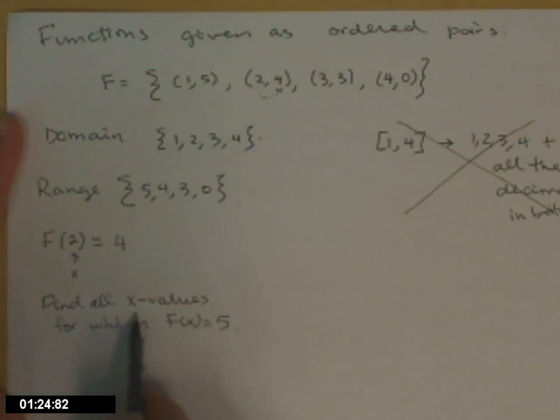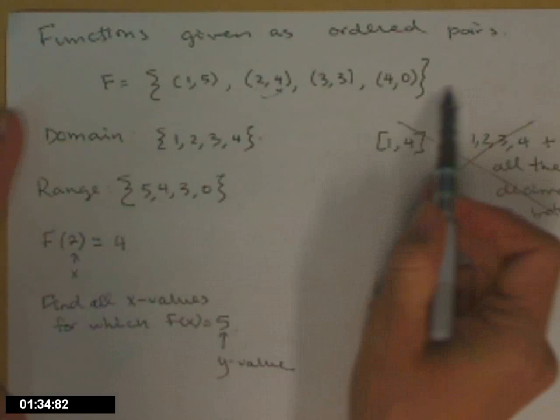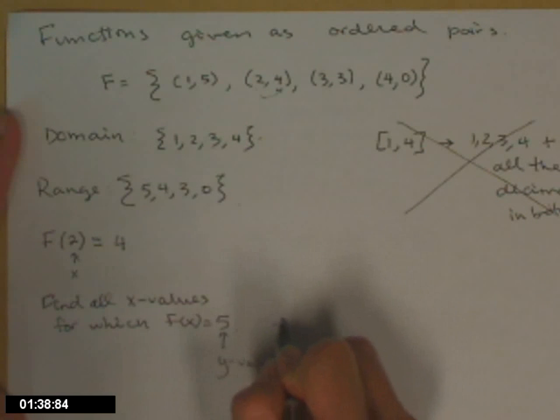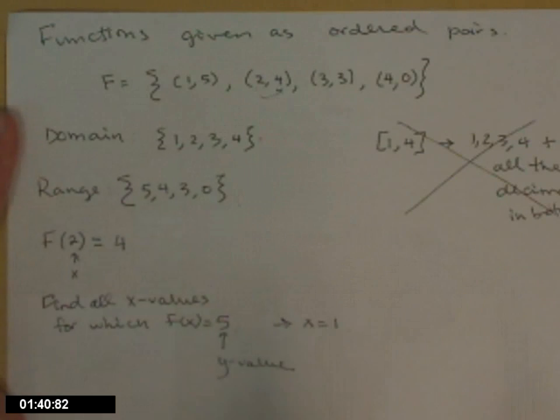And the last part, find all x values for which f of x equals 5. So again, after the equal sign, this is a y value. So I need to find where I have a y value of 5. That's that point right there. And the x value that that corresponds to is 1.